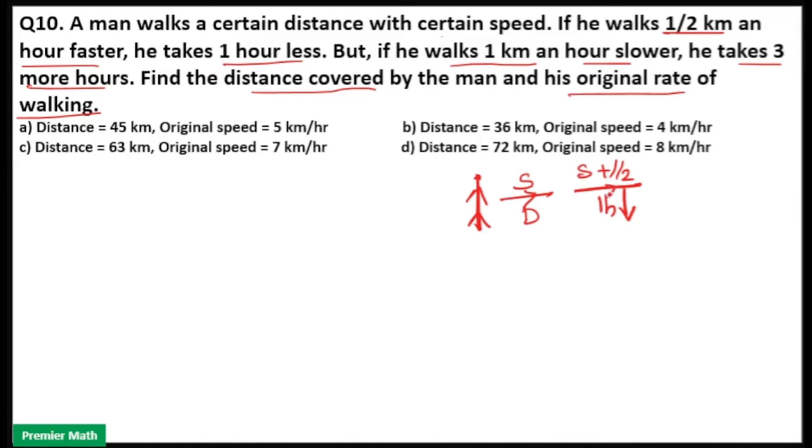And when he decreases his speed by 1 km per hour, he takes 3 more hours to cover the same journey. So we need to find out the distance and speed of this man. Here, you know distance is equal to speed into time. I will equalize the distance in both cases, that is in the first case and in the second case.